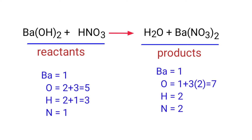If you look at this equation, the equation is not balanced. On the reactants side there are 1 barium atom, 5 oxygen atoms, 3 hydrogen atoms, and 1 nitrogen atom. On the products side there are 1 barium atom, 7 oxygen atoms, 2 hydrogen atoms, and 2 nitrogen atoms. The number of atoms are not balanced on both sides.